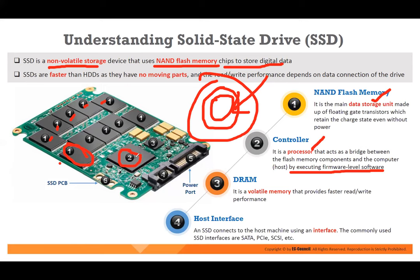The controller sends data between the NAND memory and the computer. The third component is DRAM, which is a volatile memory that provides faster reading — data can be read and rewritten here. You also have a host interface — it could be SATA, PCI, or SCSI. Normally SATA is used as the interface mainly in SSDs. The SSD is more reliable because it doesn't have any physical friction — no cylinder head movement that can cause problems.